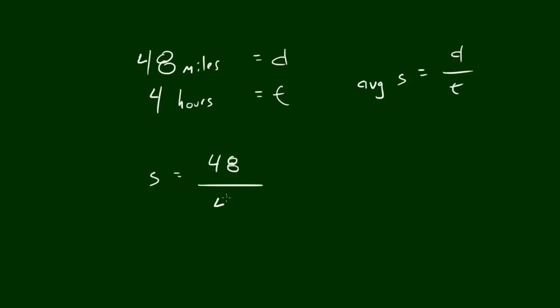I might as well plug in my miles and hours. So the average speed of this car would be 48 divided by four, which is 12 miles per hour. That is how you calculate average speed, basically take whatever distance you have and throw it over whatever time frame you have.